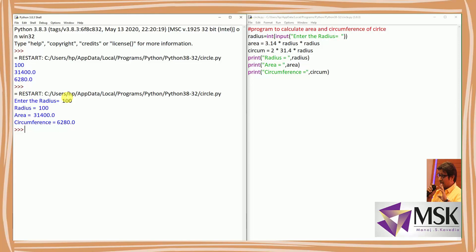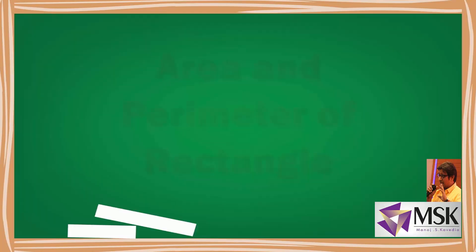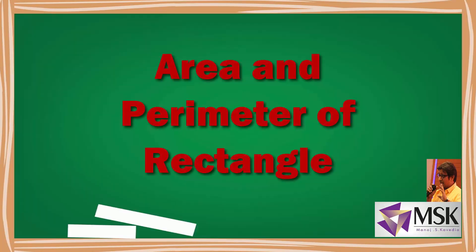So the readability is more improved. In this way I can comment the program and make it more and more readable. I hope this is clear. Now let's see the program for finding perimeter and area of a rectangle.